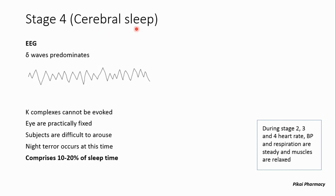Stage 4 is also known as cerebral sleep. In this stage the EEG shows delta waves only, and K-complexes cannot be evoked at all. The eyes are practically fixed with no eye movement. Subjects are very difficult to arouse. Night terrors occur at this stage, and it comprises 10 to 20 percent of total sleep time.